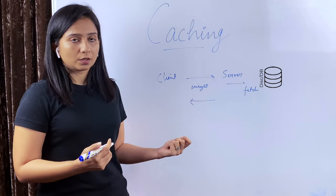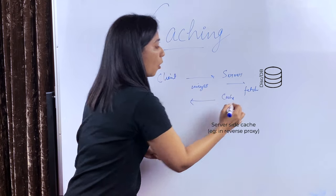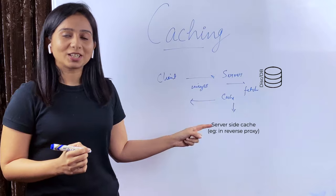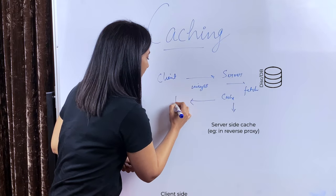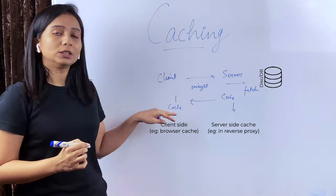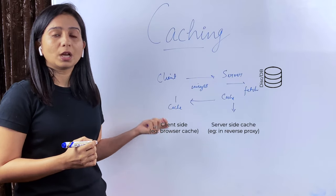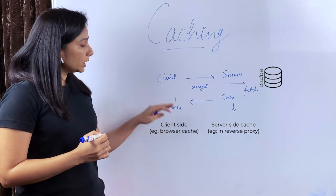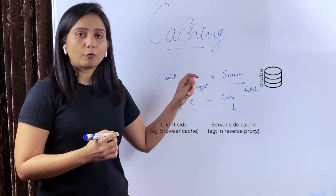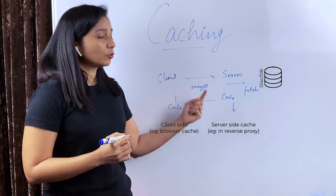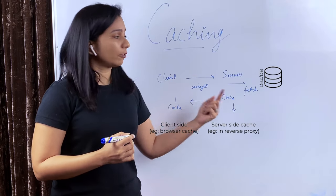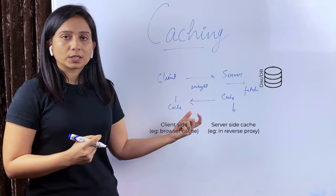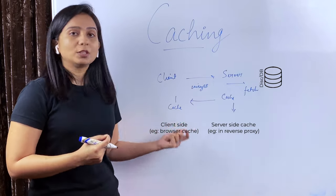So what can be done here? Either you cache a copy of the image on the server side — this can be done on a reverse proxy server — or you cache the copy of the image on the client side, for example a browser cache, or you can cache it at the forward proxy level as well. This way you save the copy of the image in cache and don't have to fetch from disk again and again.